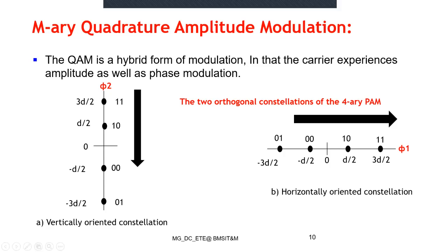To get the first quadrant message points, I multiply the vertical symbols 11 and 10 (top-down) with the horizontal symbols 10 and 11 (left-to-right), yielding four message points. For the second quadrant: vertical 11, 10 multiplied with horizontal 01, 00. For the third quadrant: vertical 00, 01 multiplied with horizontal 10, 11. For the fourth quadrant: vertical 00, 01 multiplied with horizontal 01, 00.